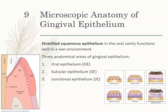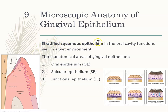Let's look at the microscopic anatomy of the gingival epithelium. Epithelium is the outside skin, the outside gum. In our body, the skin is the epithelial layer, and inside is your connective tissue where your blood supply is. In the oral cavity, we have stratified squamous epithelium — stratified means layered, squamous means flat. So the cells on the epithelium side are layered and flat.